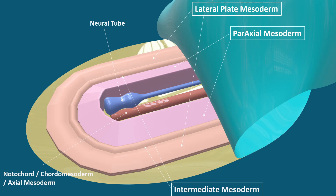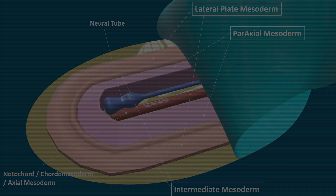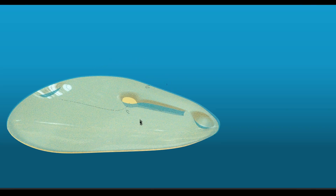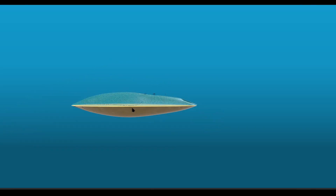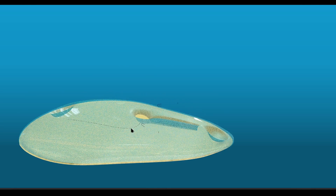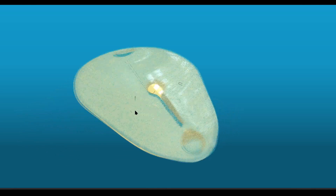So, what we have observed is that intraembryonic mesoderm consists of different components. Now, how are these different components of intraembryonic mesoderm formed during the process of gastrulation? Here is the ectoderm and here is the endoderm, and I have made this ectoderm slightly transparent so you can see what happens.